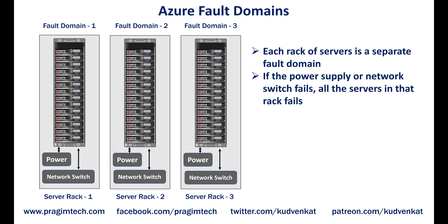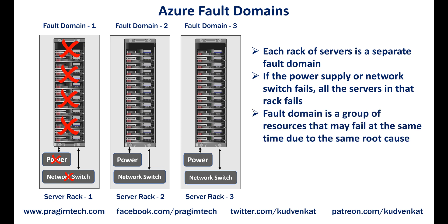For example, if the power supply or network switch fails in a given rack, only the servers in that rack fail. The rest of the server racks are isolated and unaffected. So you may think of a fault domain as a group of resources that may fail at the same time due to the same root cause — it has a single point of failure. For example, if the power supply fails, all the servers in that rack fail.